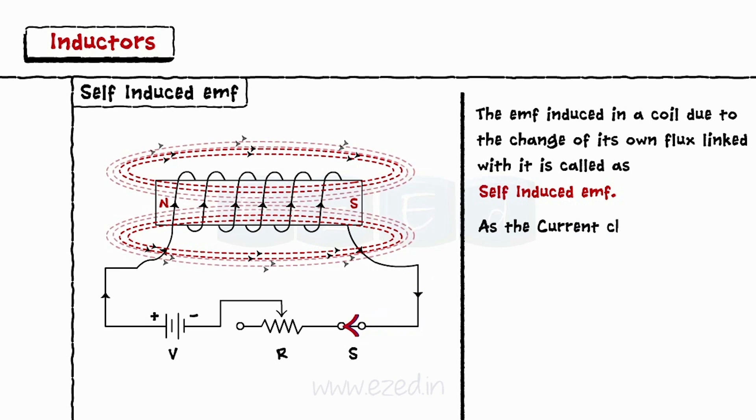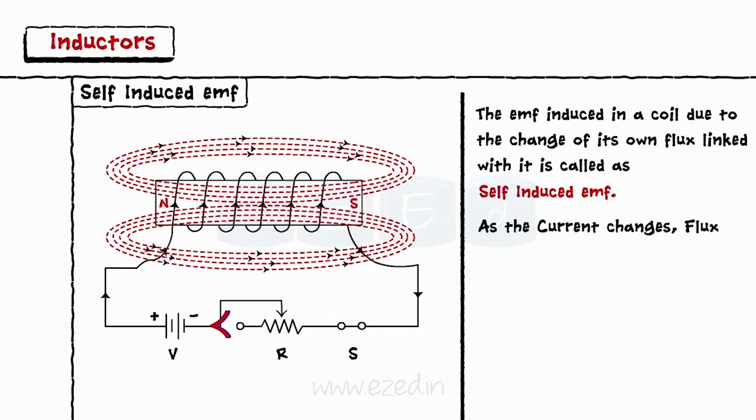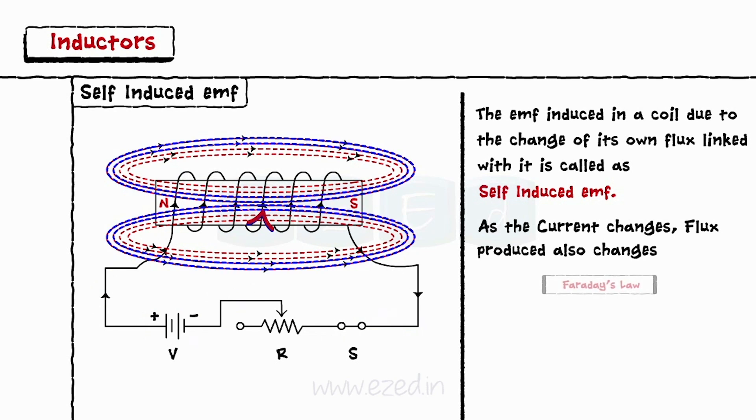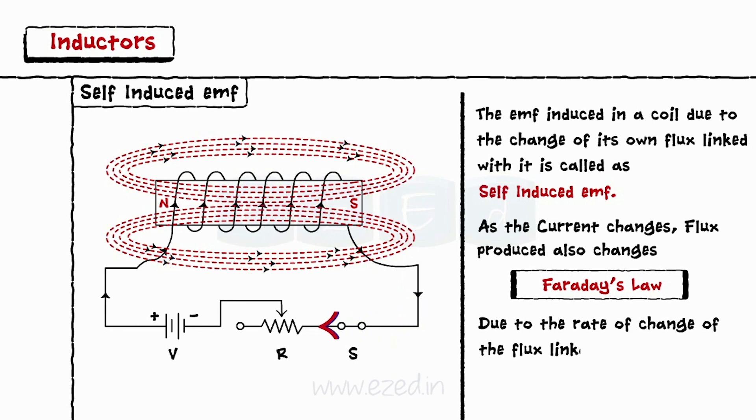As the magnitude of the current changes using a variable resistor, the flux produced also changes. According to Faraday's law, due to the rate of change of the flux linkages, an EMF gets induced in the coil.